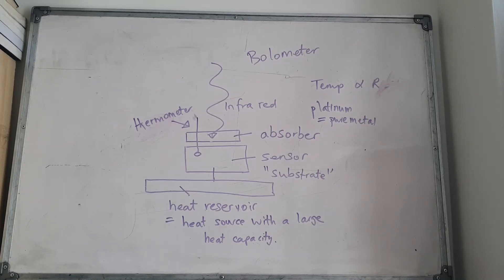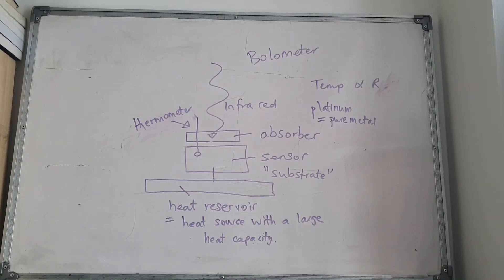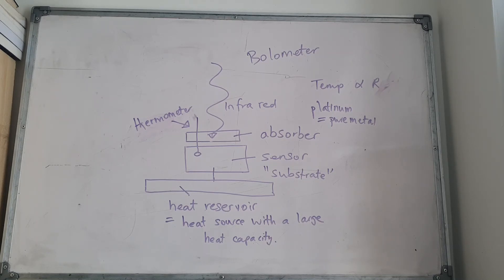The sensor or substrate is connected to the heat reservoir. Because the heat reservoir maintains a constant temperature, whenever there's a change in temperature from the incoming radiation, there will be a corresponding change in resistance. The heat reservoir is a heat source with a large heat capacity — if it were small, any changes in temperature would cause it to fluctuate.